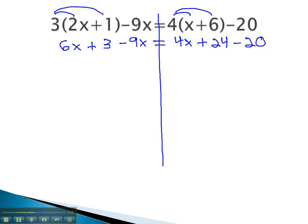But we're not done simplifying at this point, because on the left side there are still like terms, 6x minus 9x, which will give us negative 3x, and we still have the plus 3. Similarly, on the right side, we can combine like terms, positive 24 and negative 20, which will give us 4. We now have 4x plus 4.